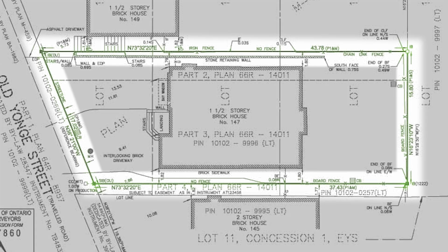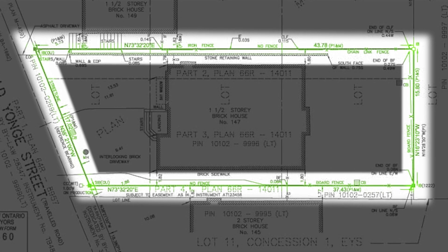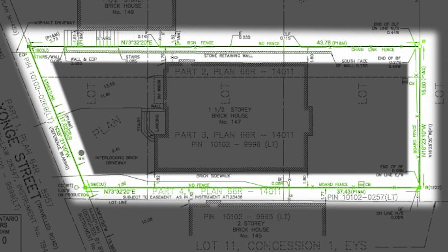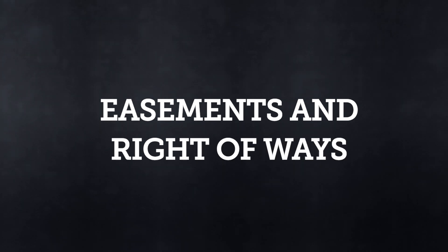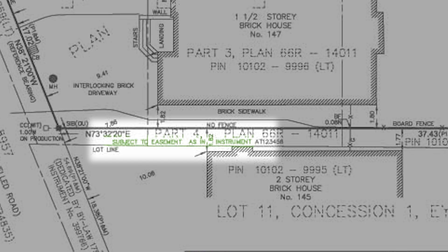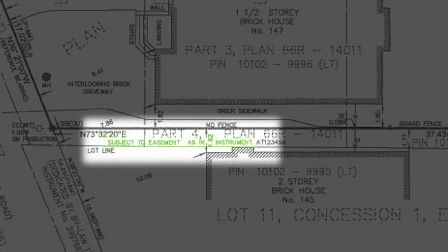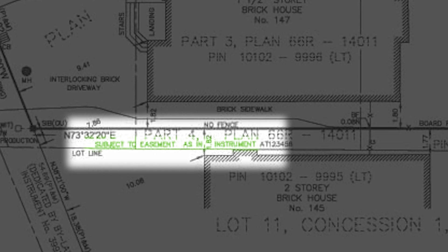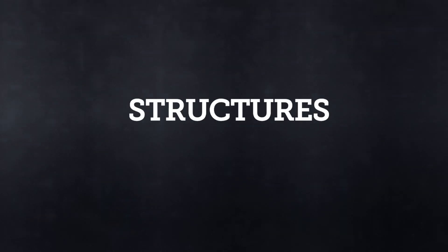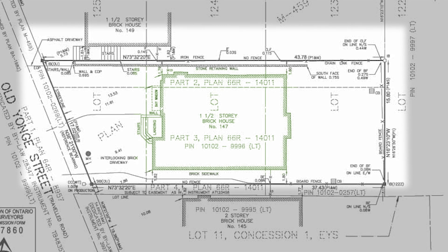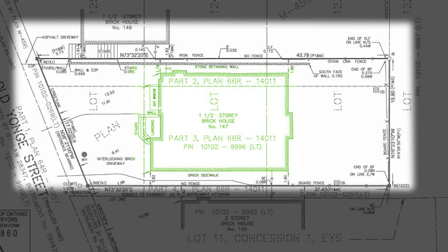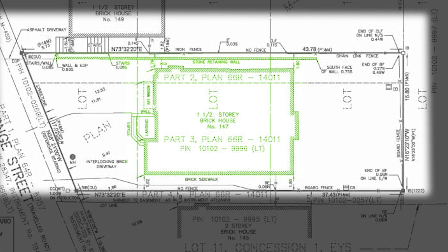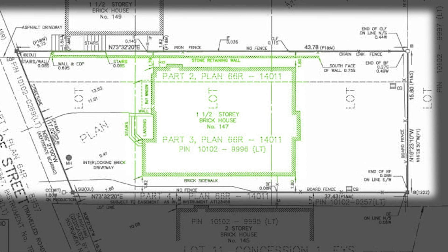Property boundaries are the thick, dark lines that show the extent of your property. You may also see easements and rights-of-way, which indicate any legal rights that others may have to use a part of your property. You may also find structures on property — the locations of buildings, fences, and other permanent installations may be shown on your land survey plan.